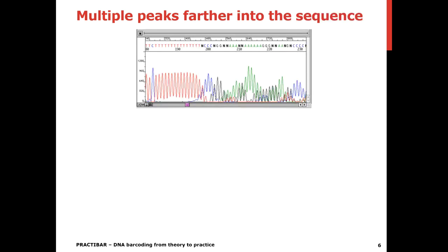So you can also have sometimes multiple peaks farther into the sequence. Like you see here, you have no sequence and then suddenly you get double peaks. So this can be caused just because of this homopolymeric region.